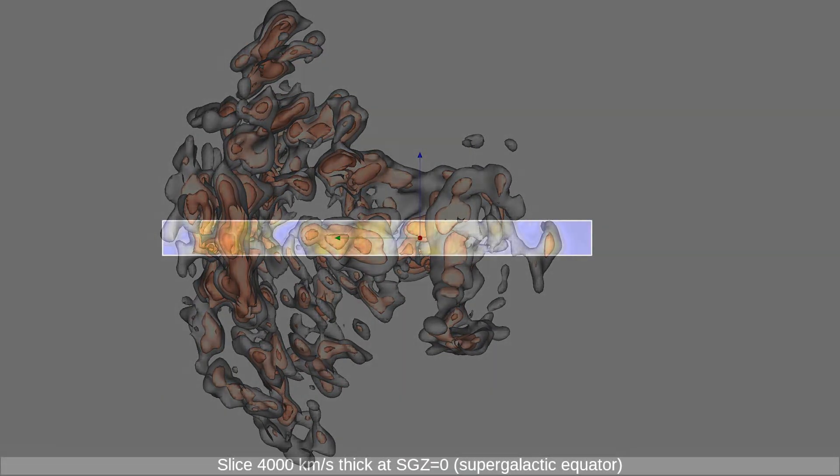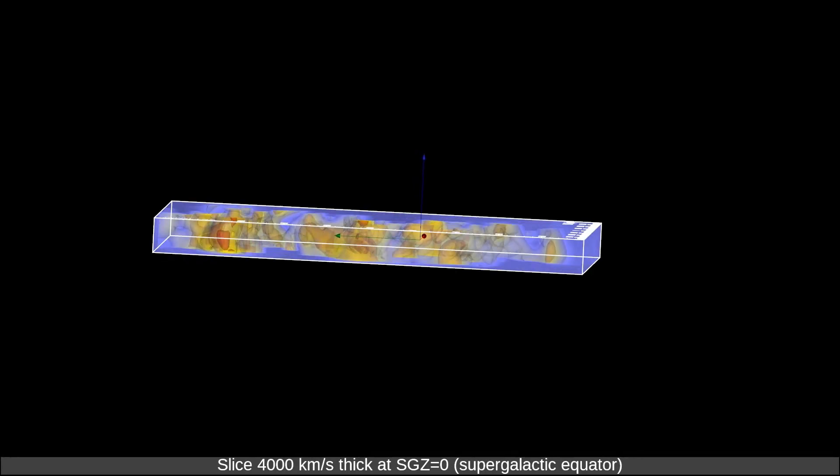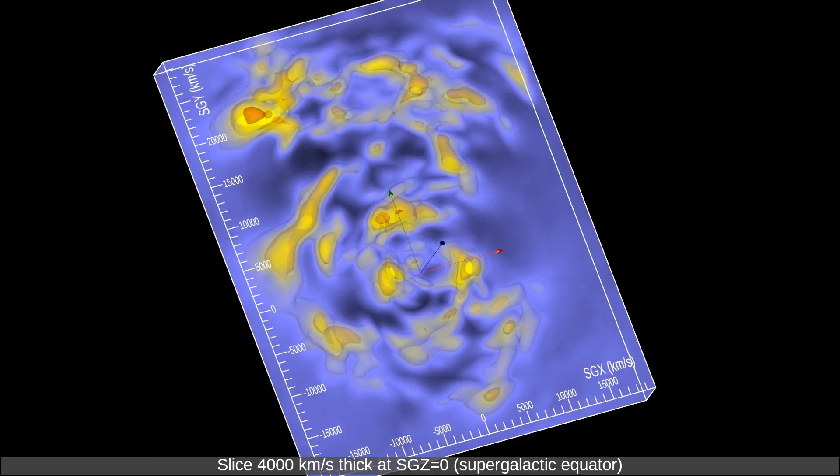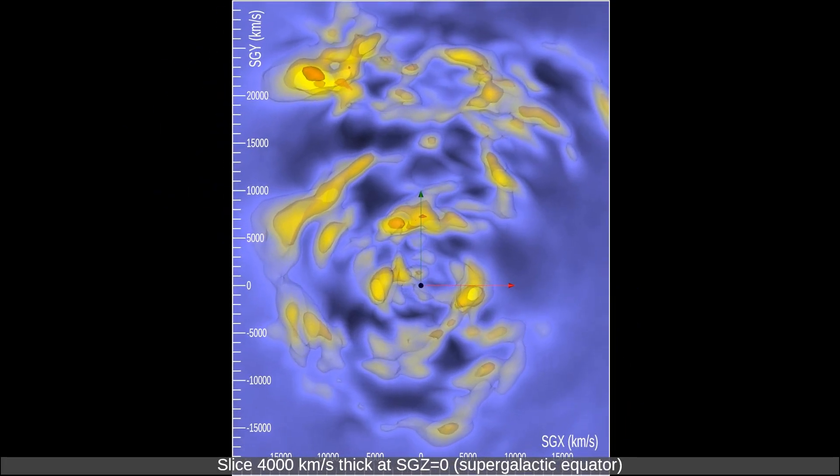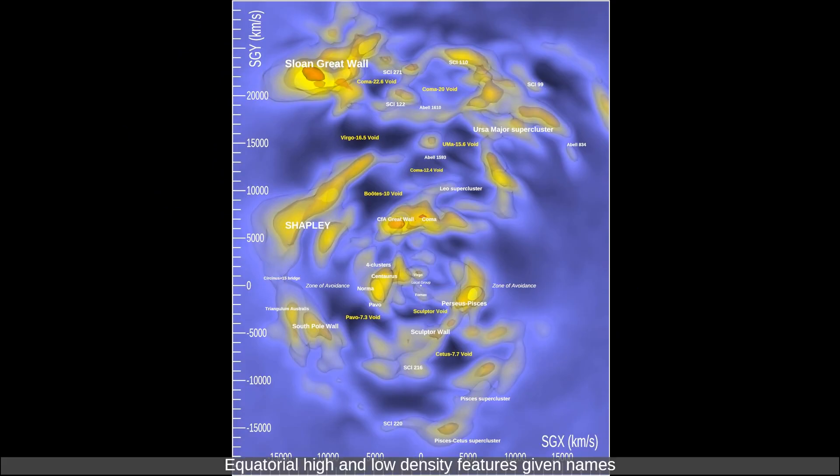Slice 4000 km per second thick at SGZ equals zero supergalactic equator. Equatorial high and low density features given names.